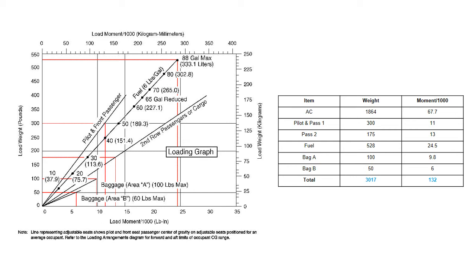On the right side of this page I've started an item weight moment divided by 1,000 chart. Notice the arm column is missing because it's not needed for these calculations. I've inserted all the items — the aircraft, pilot and front seat passenger, second row passenger, fuel, baggage in area A, and baggage in area B — with their corresponding weights. I totaled the weight to get a total as-loaded weight of 3,017 pounds. Under the moment divided by 1,000 column, I started by listing the aircraft empty weight moment of 67.7 thousand inch pounds as given. The remaining moments I calculate using the loading graph.